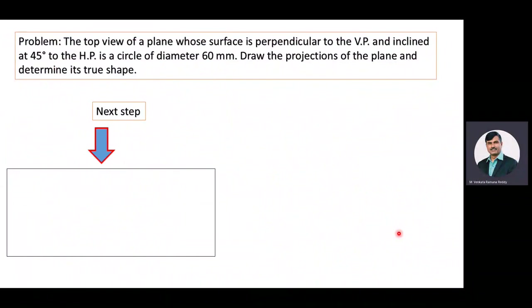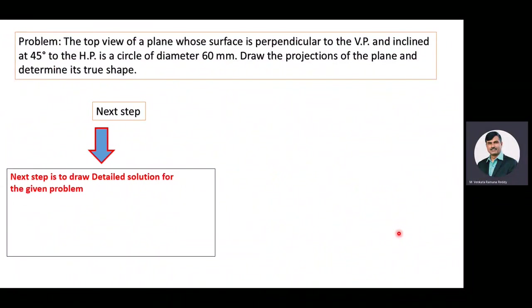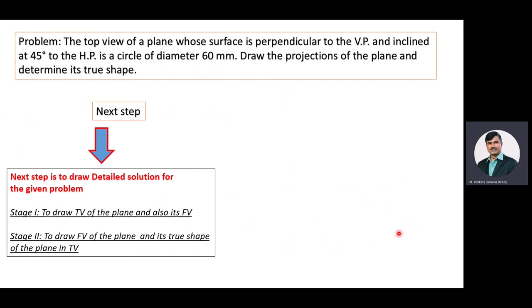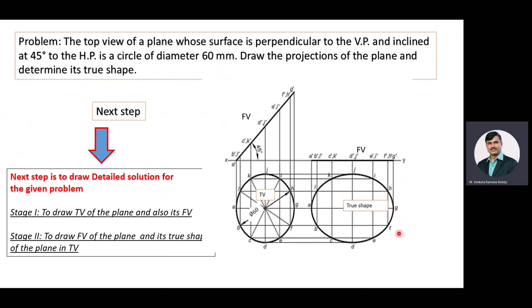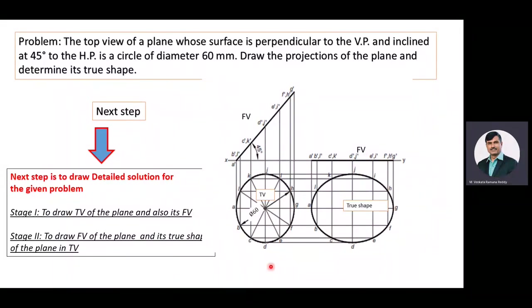The detailed solution for the given problem is divided into two stages. Stage 1: to draw the top view of the plane and also its corresponding front view. Stage 2: to draw the front view of the plane and also the true shape of the plane in the top view. Now we will move towards the detailed solution.